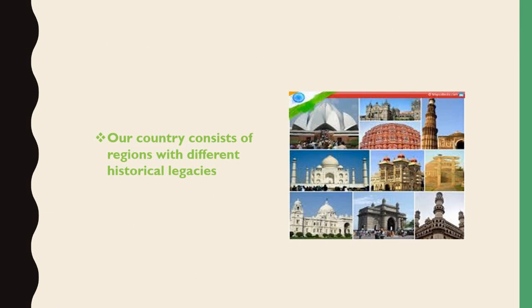Our country consists of regions with different historical legacies. There are different historical monuments built by Mughal, Hindu, and Sikh rulers that speak about the glory of these rulers and tell us about history. These legacies are handed down from one period of time to another — from ancestors to the present. All these things show Indian diversity, and though there is diversity, there is a feeling of oneness, just as students in a class work together as a whole — this leads to unity in Indian society.